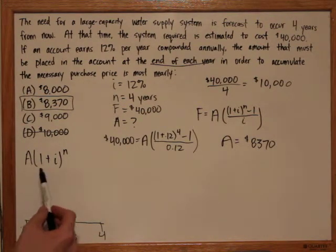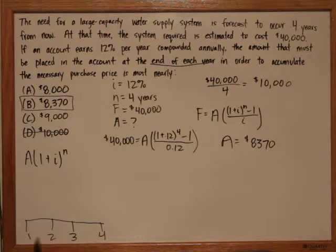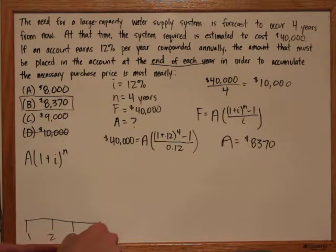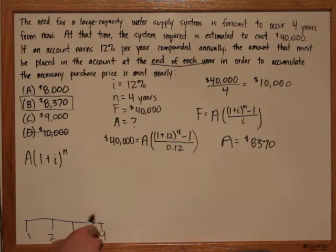So for the first payment, N will equal three. And for the second, N will equal two. The third, it will only be compounded in the fourth year, so N will equal one. And the fourth payment will not be compounded at all, so N will equal zero.